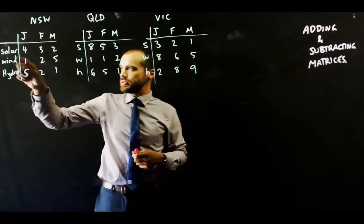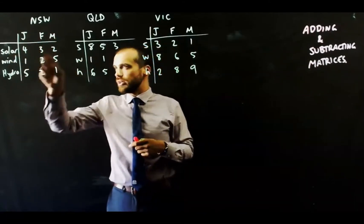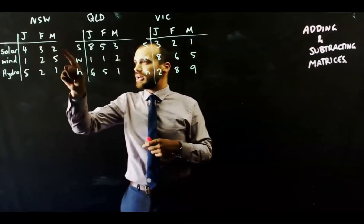Now, if you want to add these matrices, you can do that here. Just to be clear, this is New South Wales, Queensland, and Victoria, three sets of matrices. How much solar power, wind power, and hydropower, how many units of it they're creating in January, February, and March.